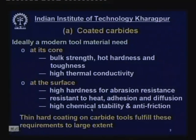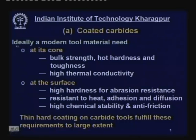Let us start with coated carbides. We already discussed the history and applications of cemented carbide tools comprising cobalt as a binder and tungsten carbide grains. Certain properties are essentially required by the cutting tool — some properties are sometimes contradictory. Some properties the tool needs at the surface, but some other properties it may need at the bulk.